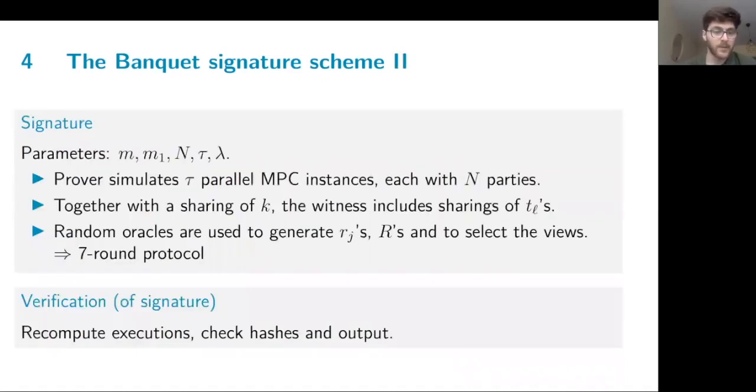For the signatures, we have the parameters of M, the number of gates; M1, which is the factorization; N, the number of parties in the MPC; tau is the number of parallel repetitions of the proof to increase soundness; and lambda is a lifting parameter because the AES is executed over F2^8. But because of the soundness requirement for our check, we need to embed the values we are checking in a much larger field to ensure that the soundness is negligible.